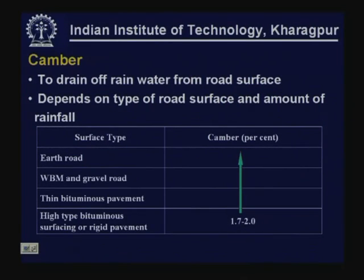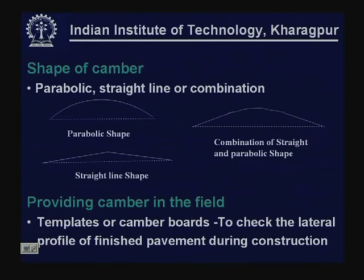Camber also depends on the amount of rainfall. For a given pavement type, the required cross slope depends on whether rainfall is heavy or light to medium. For light to medium rainfall areas, the camber will be lesser; for heavy rainfall areas, the values will be higher.